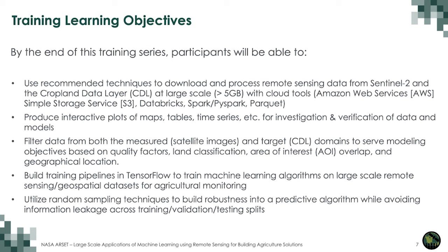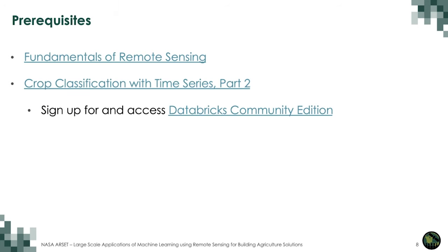By the end of this training, participants will be able to use recommended techniques to download and process remote sensing data from Sentinel-2 and the cropland data layer at large scale with cloud tools. They will produce interactive plots of maps, tables, and time series for investigation and verification of data and models. They will filter data from both the measured and target domains to serve modeling objectives, build training pipelines in TensorFlow to train machine learning algorithms on large-scale remote sensing data for agricultural monitoring, and utilize random sampling techniques to build robustness into a predictive algorithm while avoiding information leakage across training, validation, and testing splits. Prerequisites include the fundamentals of remote sensing, crop classification with time series part 2, and access to Databricks Community Edition.